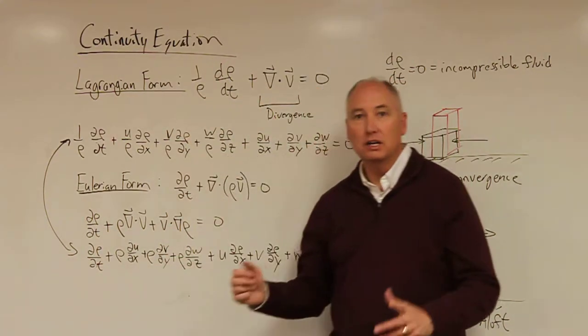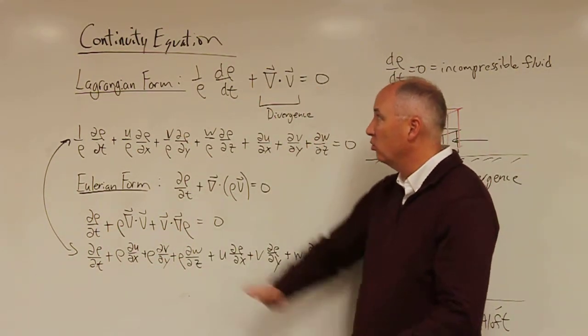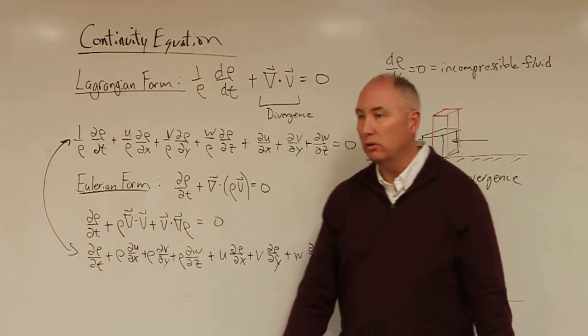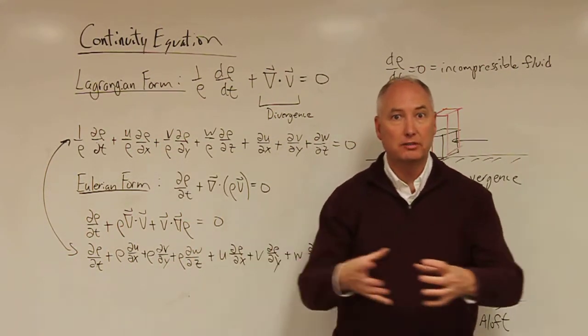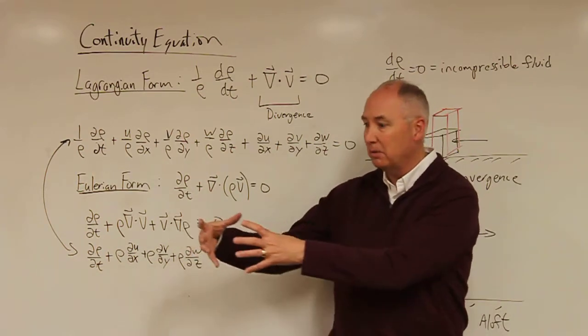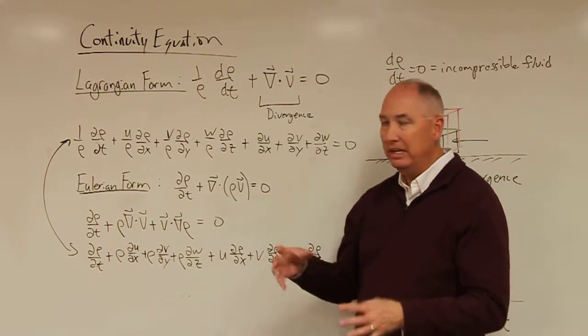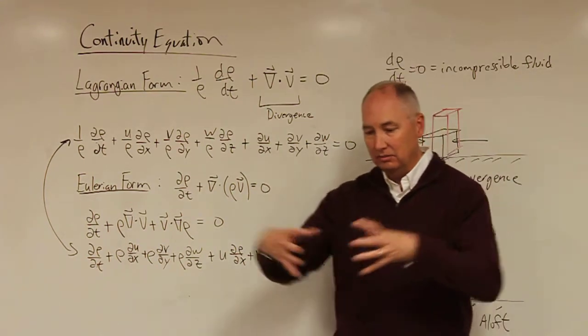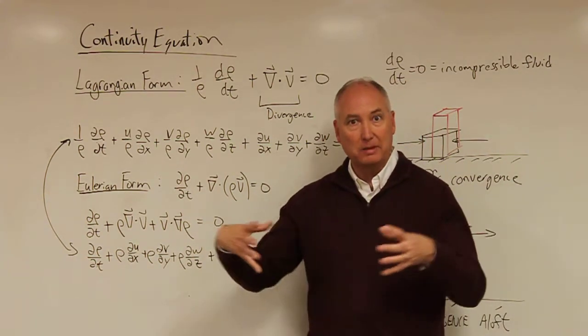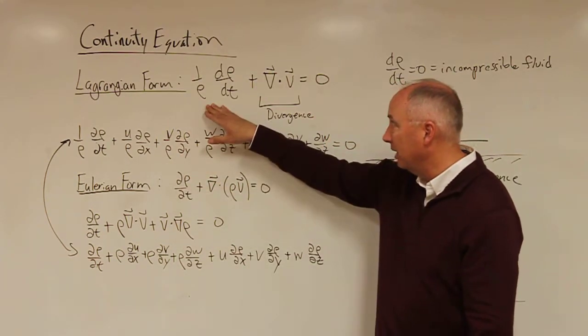So we have two forms of the continuity equation. One is the Lagrangian form. Recall that the Lagrangian actually follows the motion of an air parcel. So as this air parcel is moving, how is the density of that air parcel changing? Is it essentially diverging or converging, expanding or contracting?